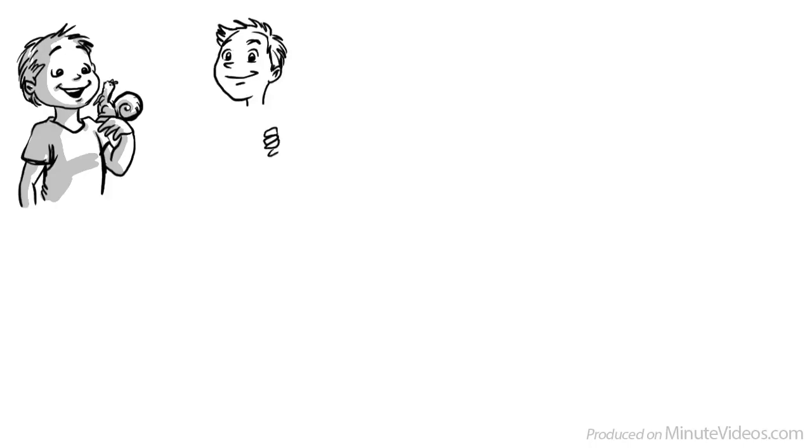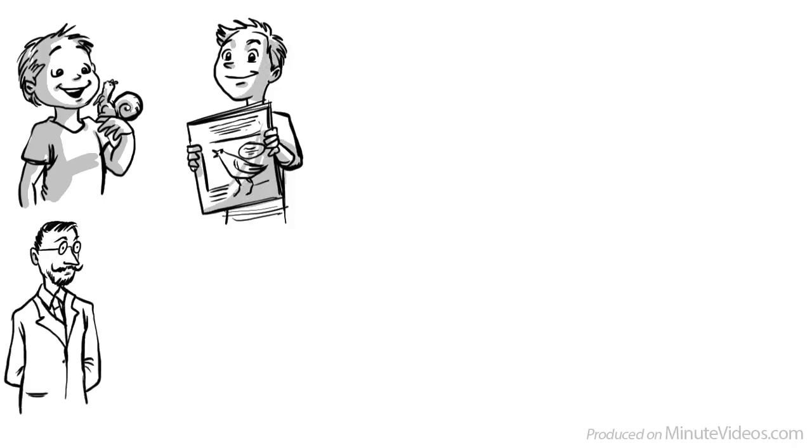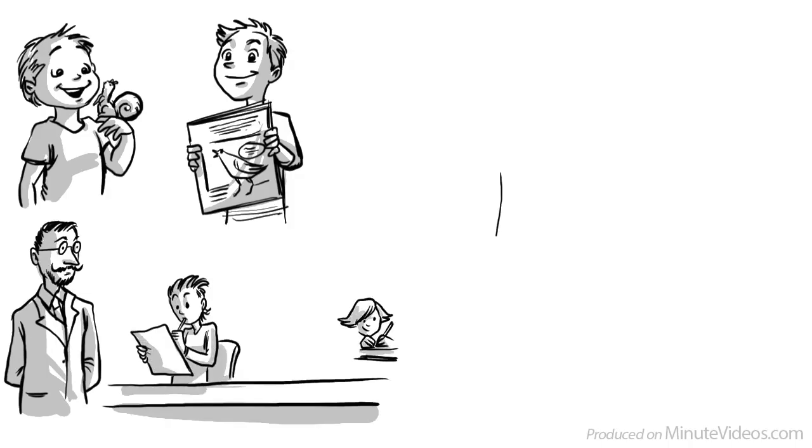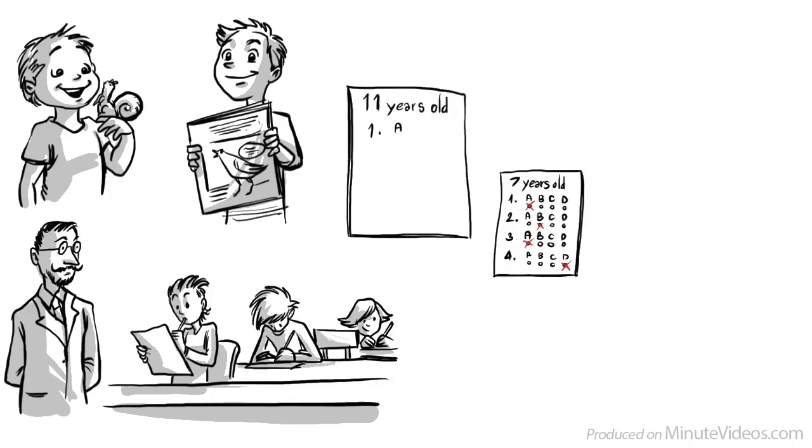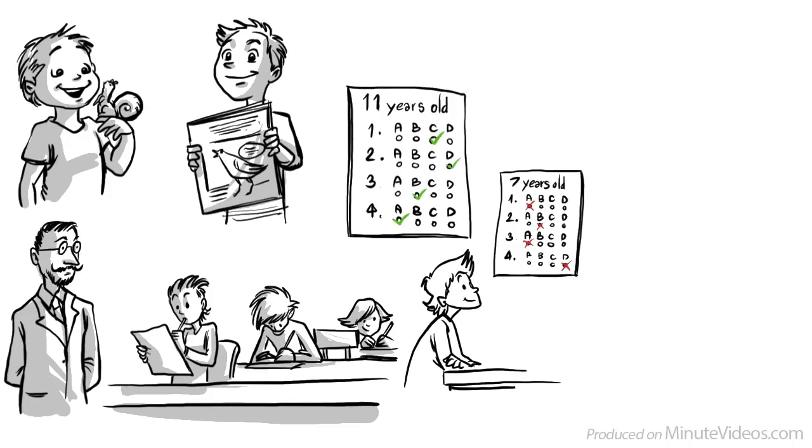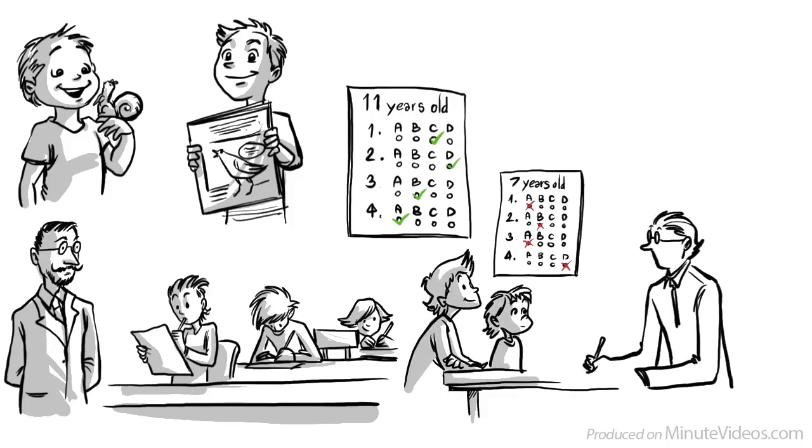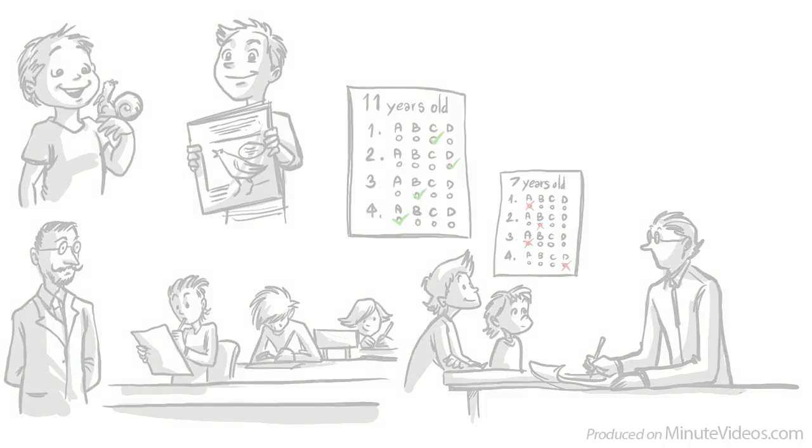Jean Piaget's first interests were animals, and he published his first scientific paper on albino sparrows in 1907, when he was just 11 years old. In 1920, he began working with standardized intelligence tests. He realized that younger children consistently make types of mistakes that older children do not. He concluded that they must think differently, and spent the rest of his life studying the intellectual development of children.